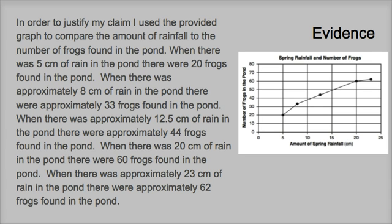This is how I analyzed it. When there was 5 centimeters of rain, there were 20 frogs found in the pond. Notice I specified '5 centimeters of rain' and '20 frogs' — not just 'when we found 5, there was 20.' If using bullet form, you could write: 'when there was 5 centimeters of rain, there were 20 frogs found in the pond.' Be careful not to just put '5 centimeters equals 20 frogs,' because that's not fully explaining your evidence.